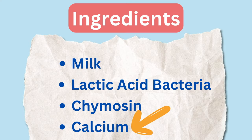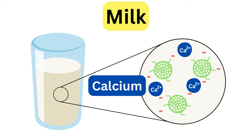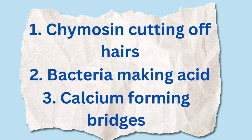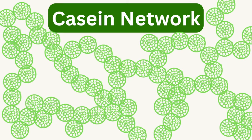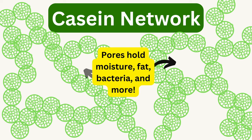The third thing happening during clotting is that the calcium we added — which is positively charged — can help shield some of those negative charges if we're not exactly at the isoelectric point. Calcium with its plus-two charge acts like a bridge or a link between two negative charges on the casein micelles. So these three things happening at once allow the casein micelles, once stable and individual, to come together and form aggregates until they build a protein network strong enough to clot and hold in the liquid whey, fat globules, microbes, and enzymes.